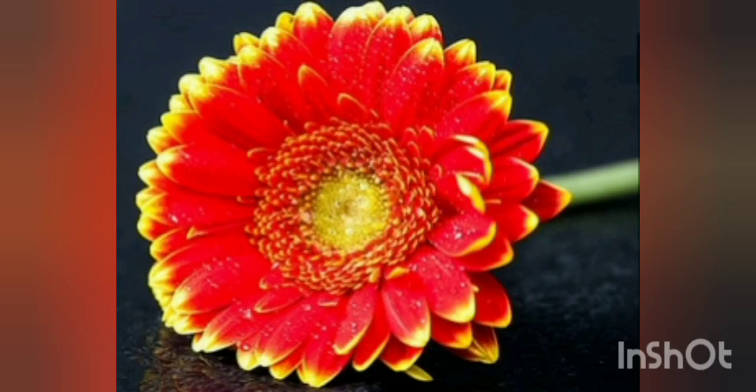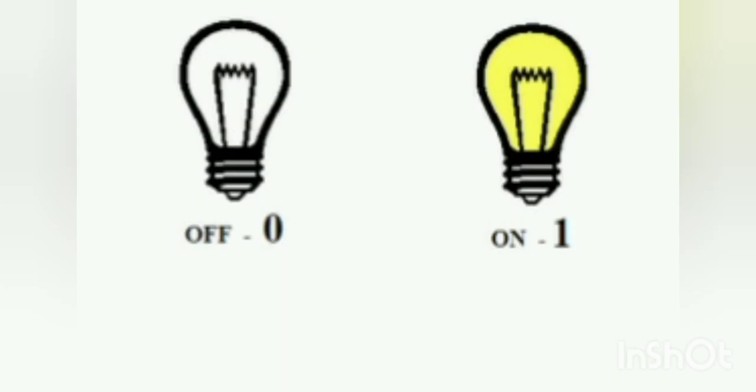So children, binary has two values, either off or on. For example, light bulb. It has only two positions, right? Off or on.